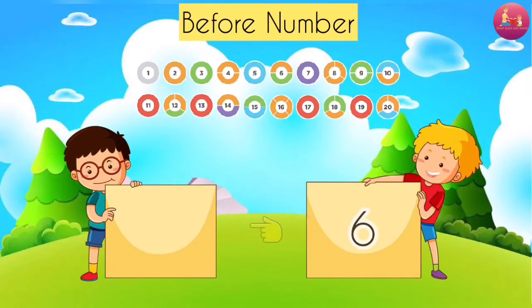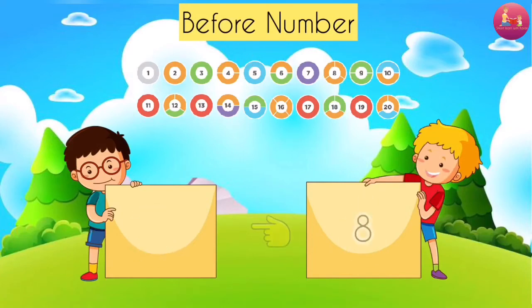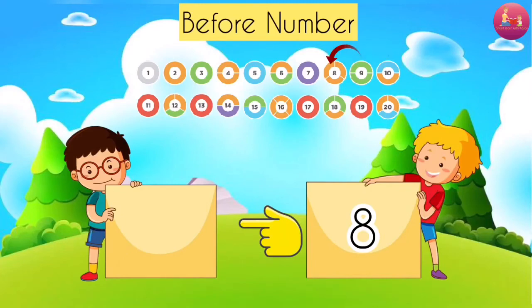What comes before 6? Backward counting: 10, 9, 8, 7, 6, 5. Before 6 is 5. What comes before 8? Backward counting: 10, 9, 8, 7. Before 8 is 7.